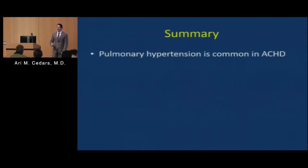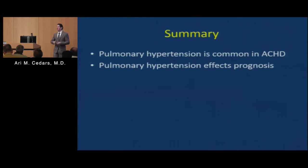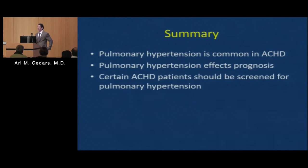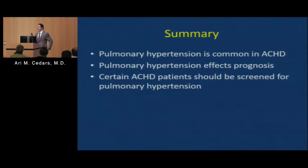Alright, that's it. What I want you to take away from this is that pulmonary hypertension is common in people with ACHD and you need to get yourself screened. Certain people are more susceptible, and it is significant — it affects prognosis. If you do have pulmonary hypertension, you need to be seen by a specialist. And with that, I'll conclude and open the floor for questions.